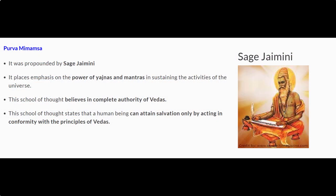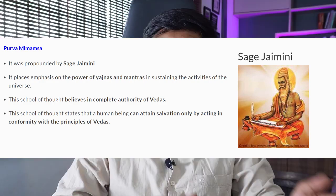Then comes Purvamimamsa. Sage Jamini is the main sage associated with Purvamimamsa. It focuses on the ritualistic aspects of the Vedas and propounds the importance of pujas, yajnas, and various rituals elaborated in the Vedas. This entire philosophy is based on the Karmakanda, or the ritualistic portions of the Vedas.